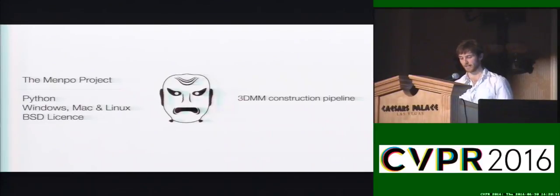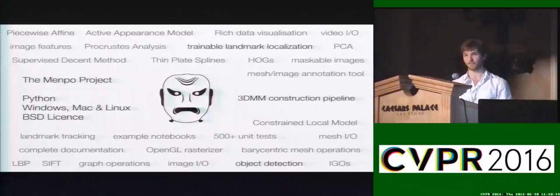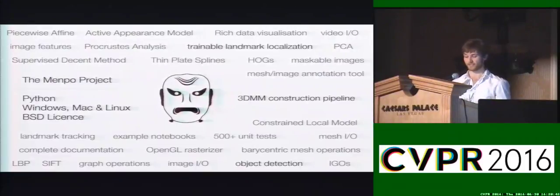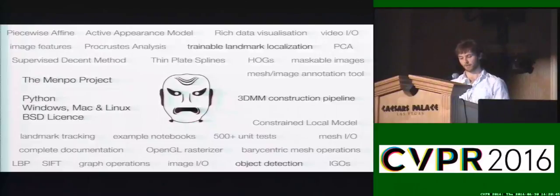As the second major contribution from our work, an open-source implementation of our fully automatic pipeline is made available. The code is made available as part of the Menpo project, a set of open-source Python libraries for computer vision. If you work with images, meshes, bounding boxes, annotations, if you need image warping, object detection or landmark localization, the Menpo project may have something useful for you.